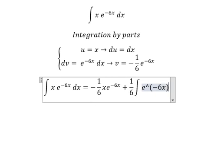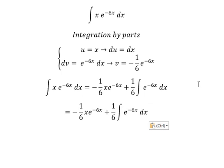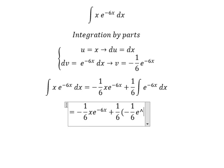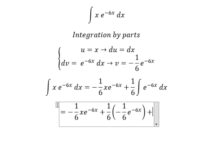So the integration of this one you got negative 1 over 6 e to the power of negative 6x, and we put C.